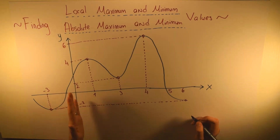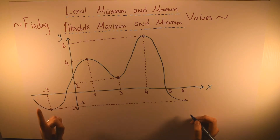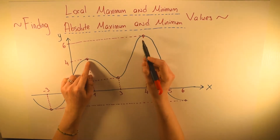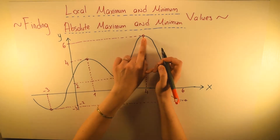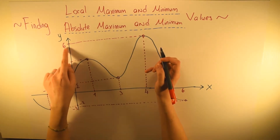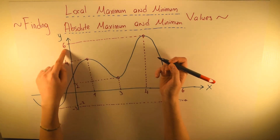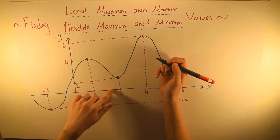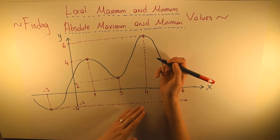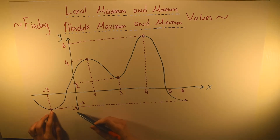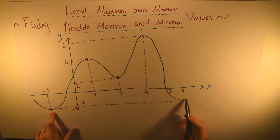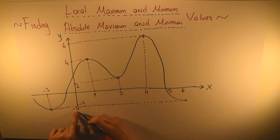The absolute maximum value is the highest one among our local maximum values. We said that these two points are local maximum values. When you look at these two points, this one is higher than the other. So when x is equal to 4, y is equal to 6, and this 6 is our absolute maximum value. The absolute minimum value is the lowest one among our local minimum values. When x is equal to 6, y is equal to minus 3, so minus 3 is our absolute minimum value.